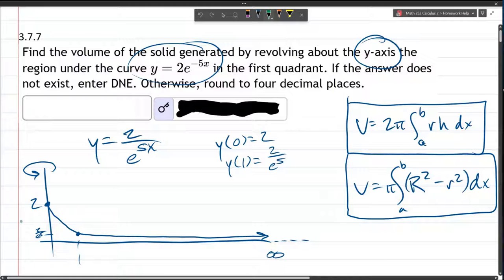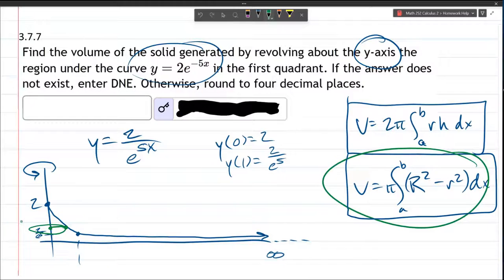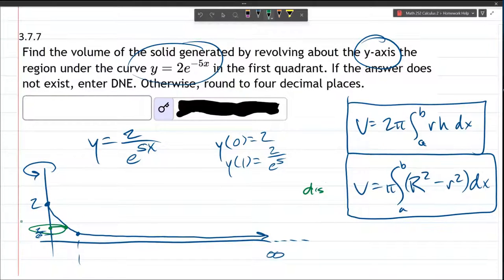So if I do cross-sections like this, this cross-section rotates into a disk, and that would be this second formula. So if I use disks, I'm on the second formula. And if I use shells, then I'm going to use the first formula.